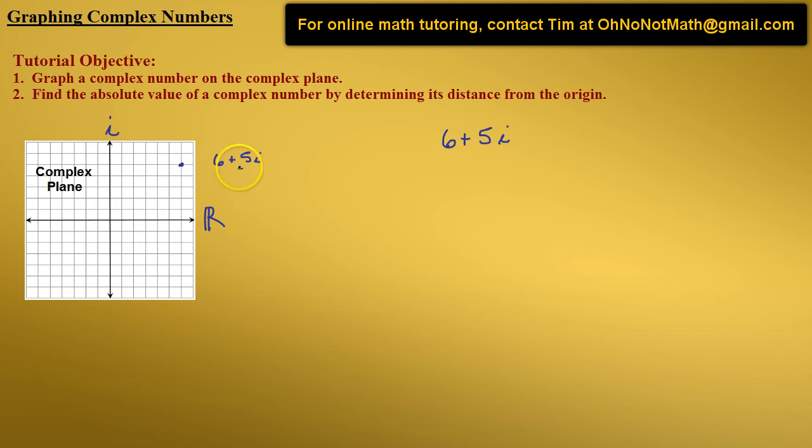So what is the absolute value of 6 + 5i? Well, the absolute value of a complex number is the distance from the origin to its point in the complex plane.